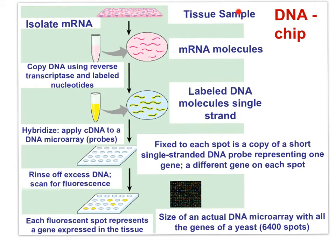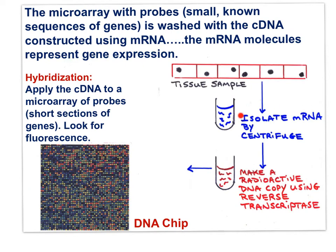Here's the process in full. We have a tissue sample with active cells. We isolate the mRNA from those cells. The mRNA molecules are then used to copy DNA with reverse transcriptase, and labeled nucleotides give the DNA fragments some fluorescence. We hybridize the copy DNA to a DNA microarray — the probes on the microarray. We rinse off the excess DNA, scan for fluorescence, and each fluorescent spot represents a gene expressed in the original tissue.